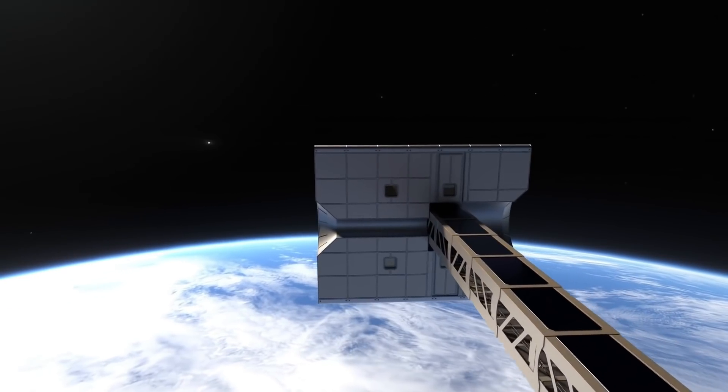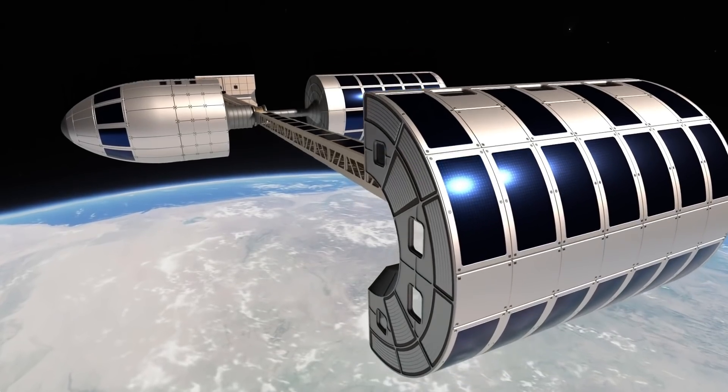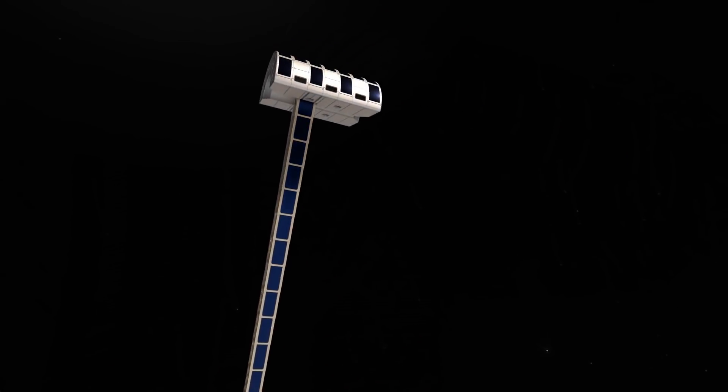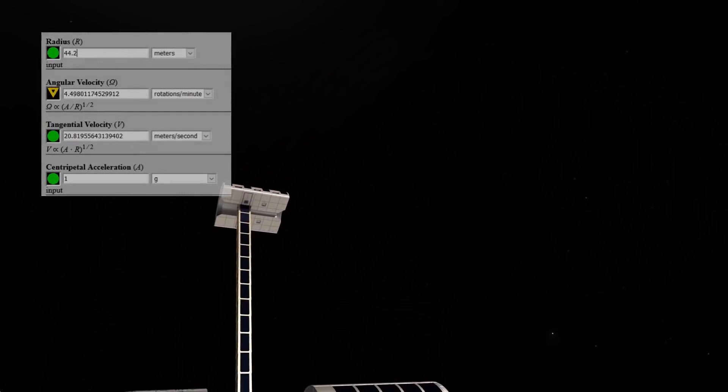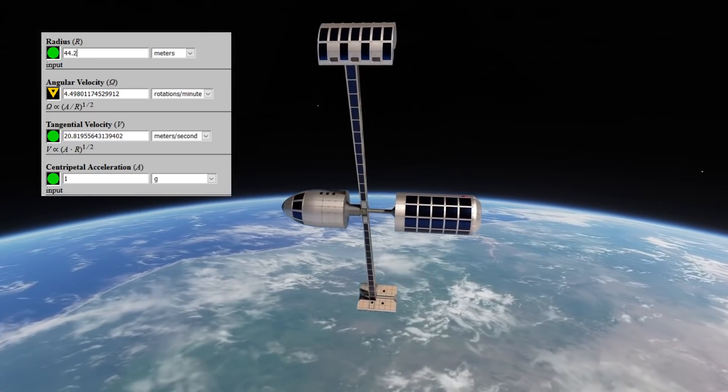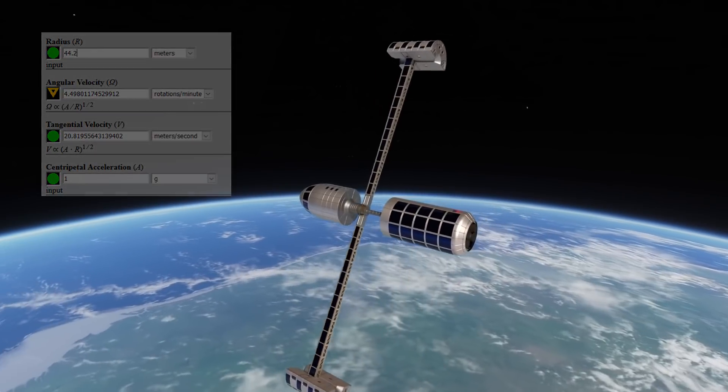If we want to increase the rotation to get up to normal Earth gravity, 1g, or 9.81 meters per second squared, we would need to go up to about 4.5 rpms, or almost 21 meters per second angular velocity. This would put a lot more strain on the structures.